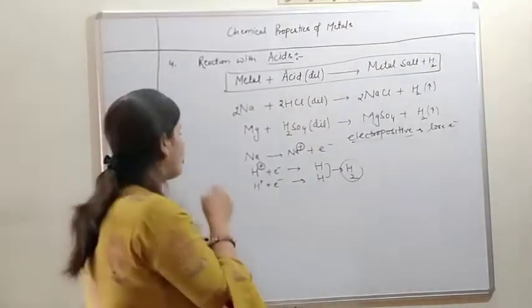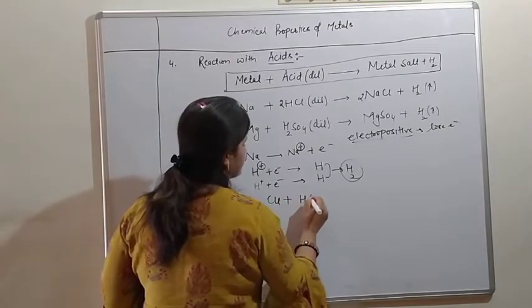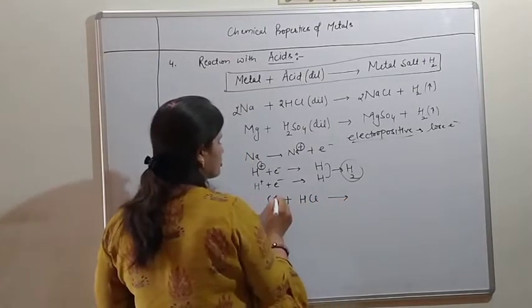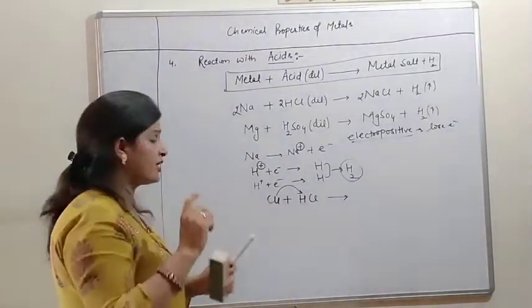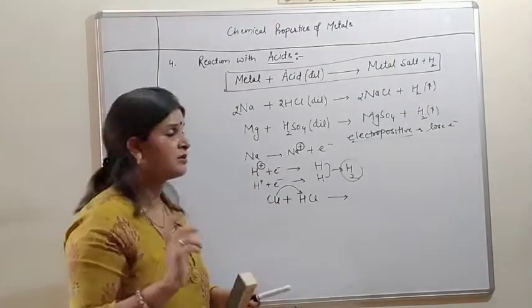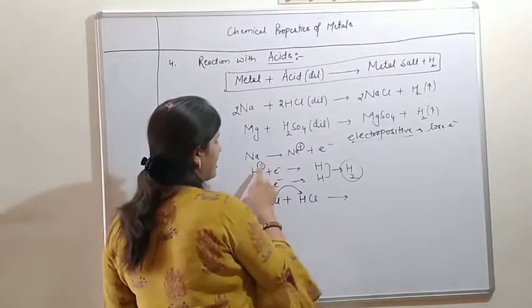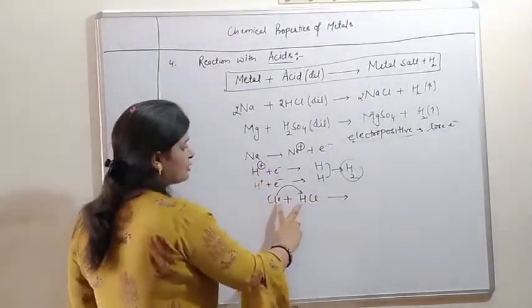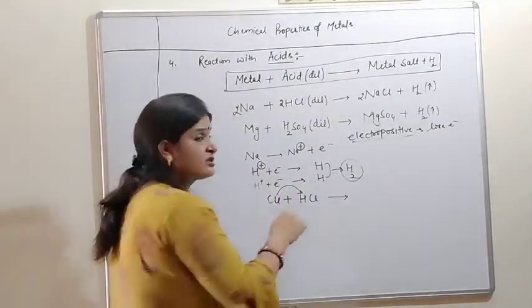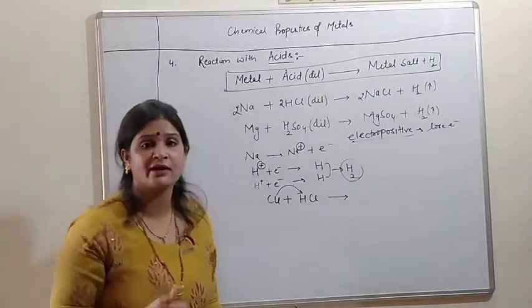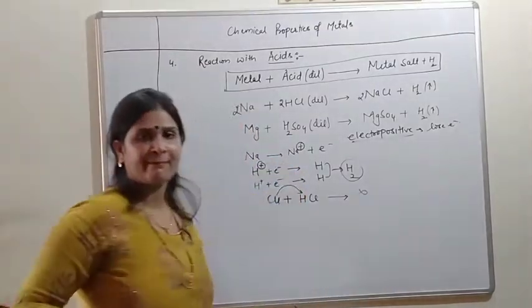Metals below hydrogen like copper, if you want to react it with acid, the reaction does not take place because copper is less reactive, not able to displace hydrogen. In magnesium and sodium, they are more reactive, they act like metal and hydrogen acts like non-metal. But if we compare copper and hydrogen, here hydrogen acts as a metal and is more reactive than copper, so the reaction does not take place.